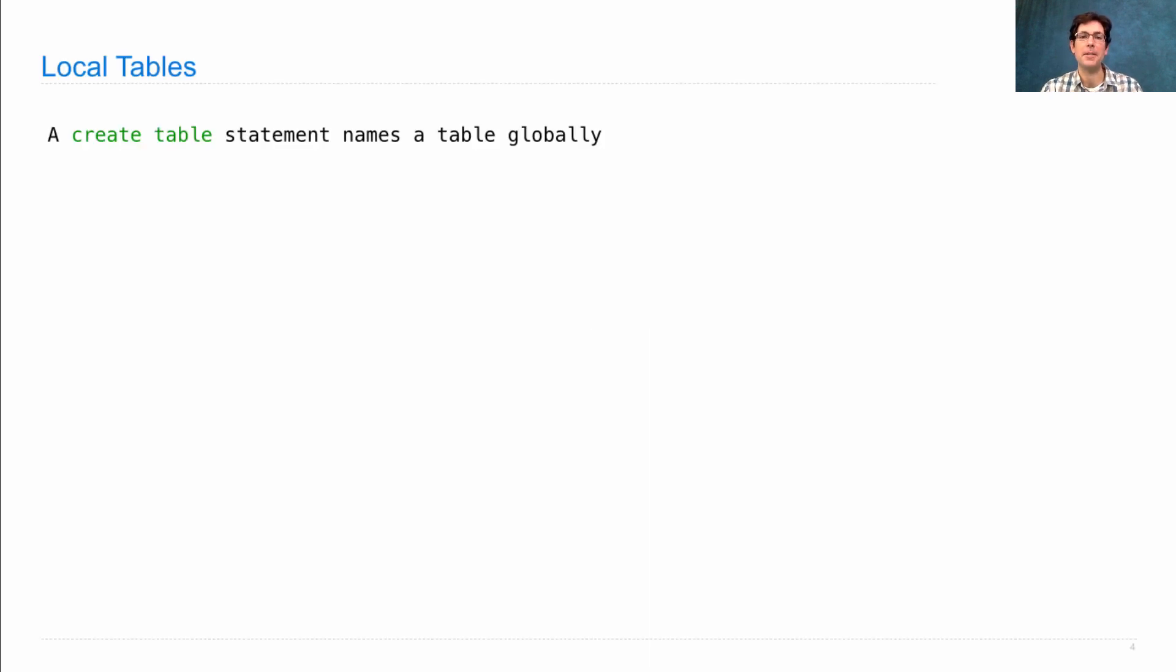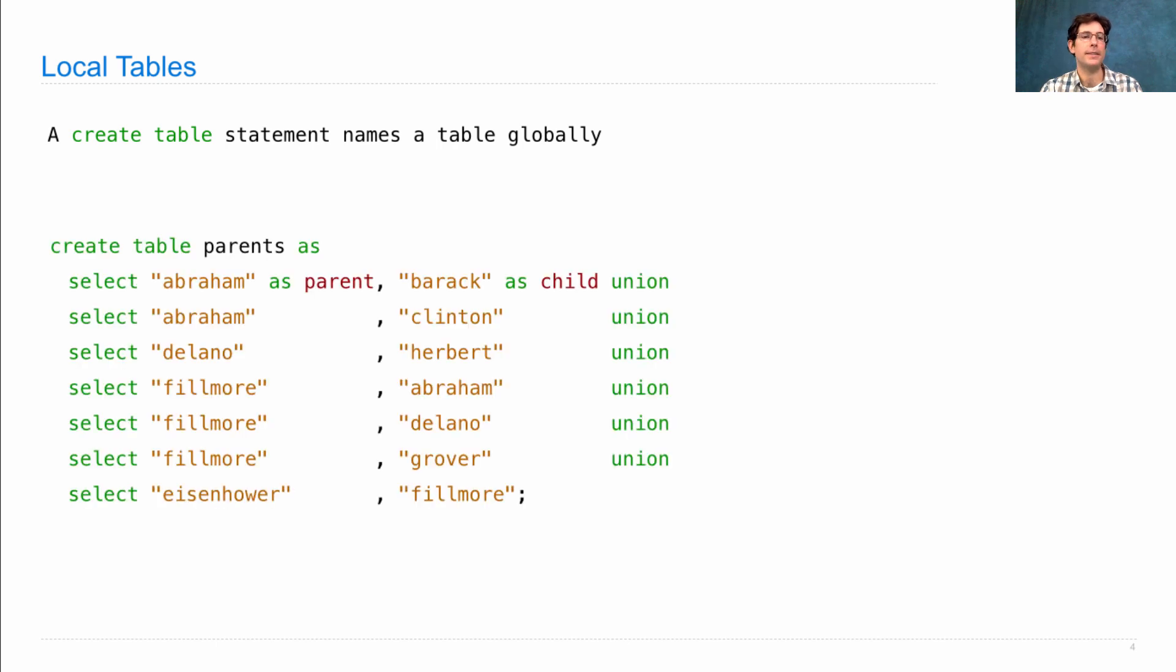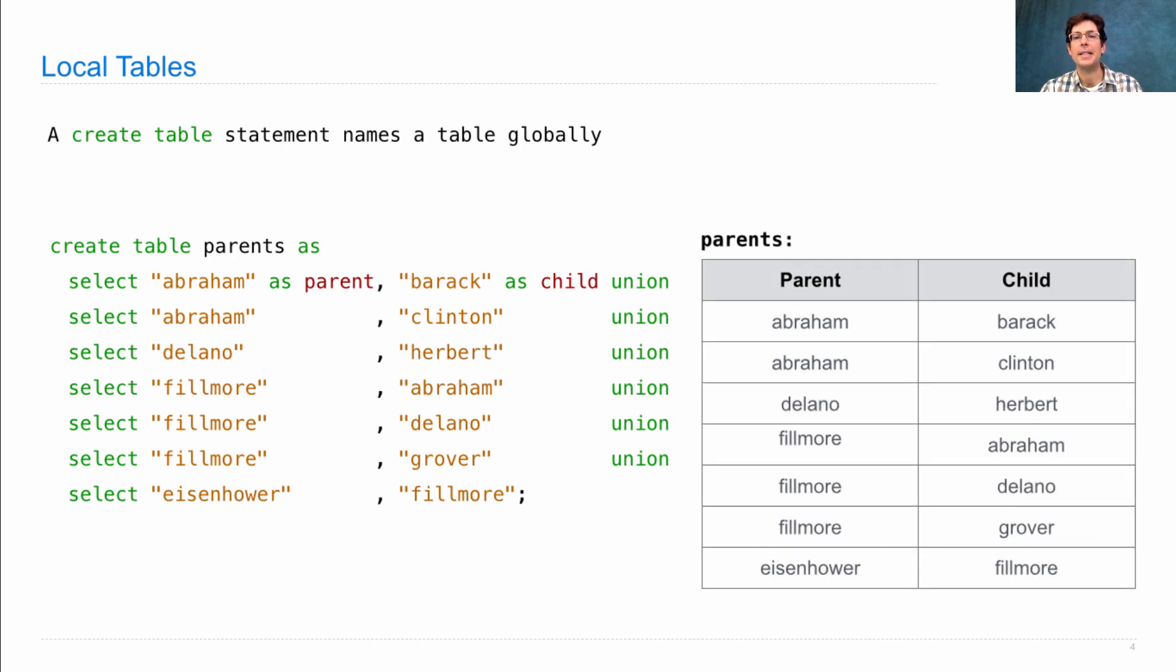A create table statement names a table globally. If I say create table parents as select this, select that, I'll get a table called parents with a parent and a child column with the following data.